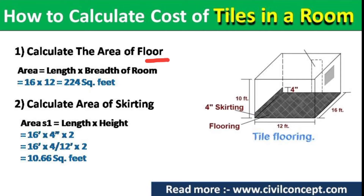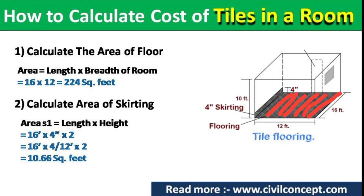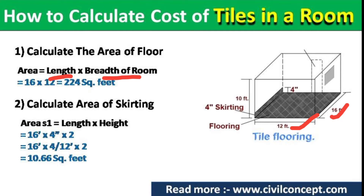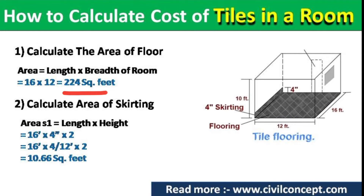First, in step one, we have to calculate the total area of the floor. For example, this is our room and this is our floor. To calculate the floor area we simply multiply the length and width of the room, which is 16 feet and 12 feet. The total area is 224 square feet.